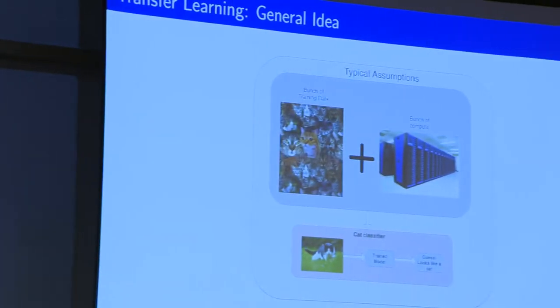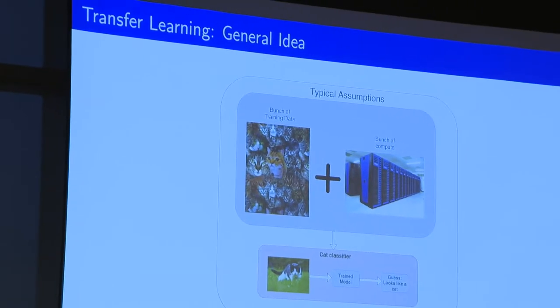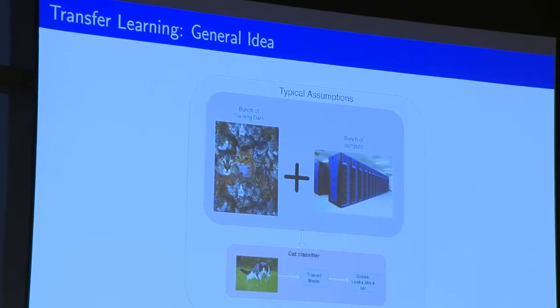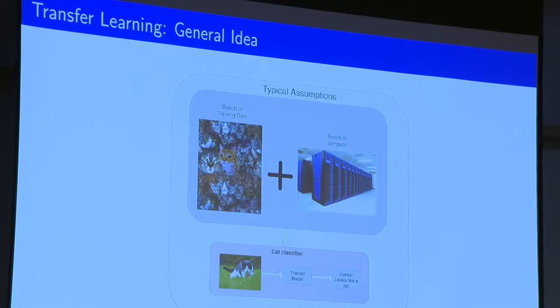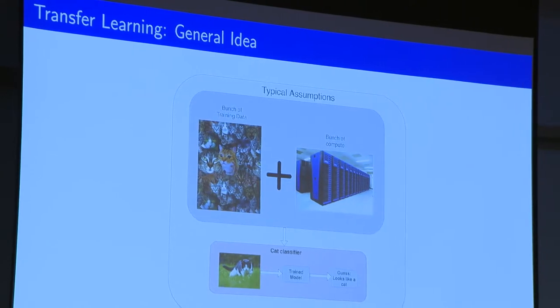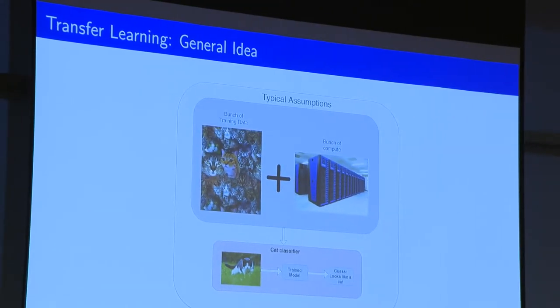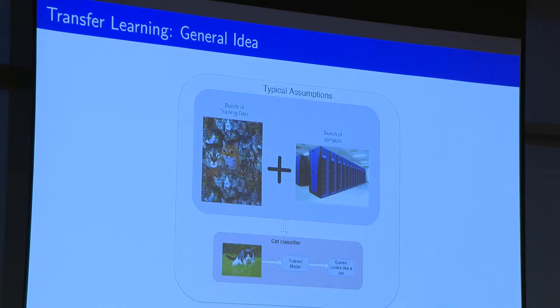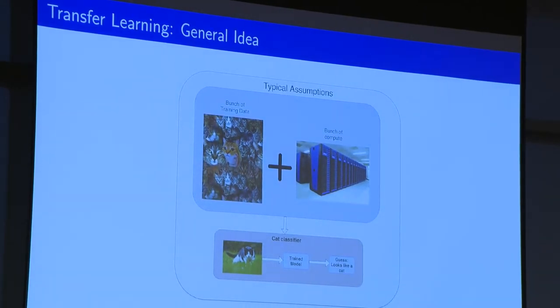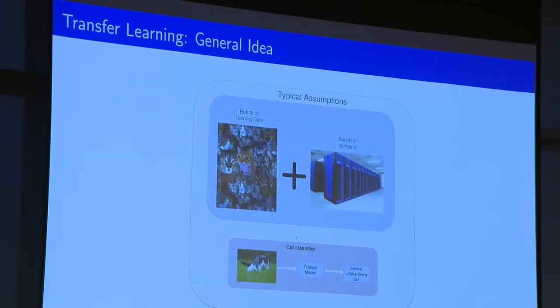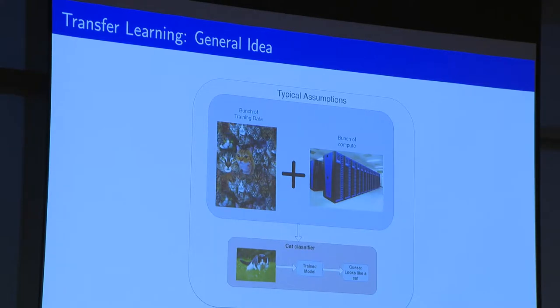When people start doing neural networks, they think their life is going to be like this: they're going to have millions of pictures of cats and want to make a cat classifier. They think they're going to have beautiful cat pictures, millions of them — a massive supercomputer — and train the model, and it'll do great in cat classification.